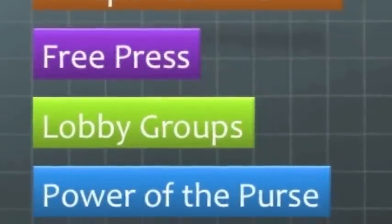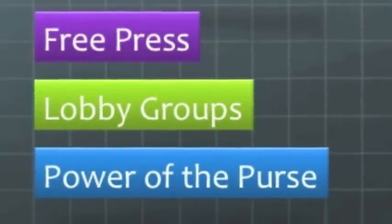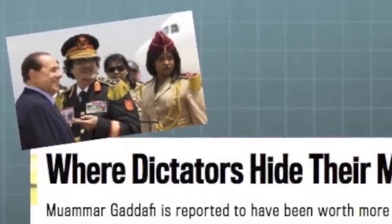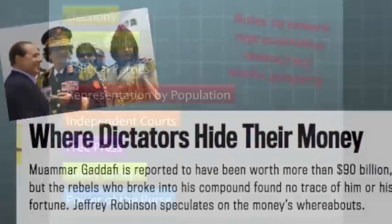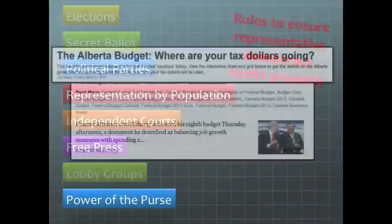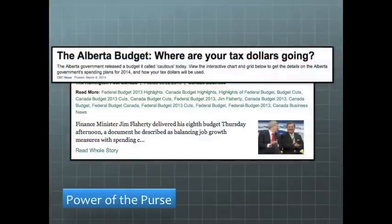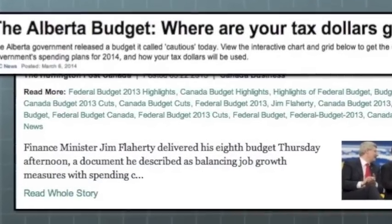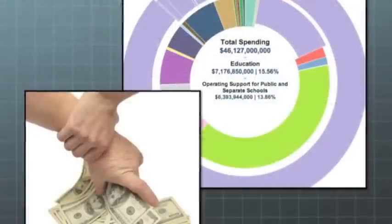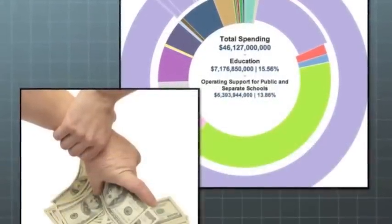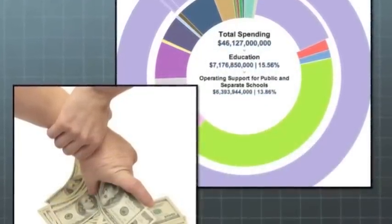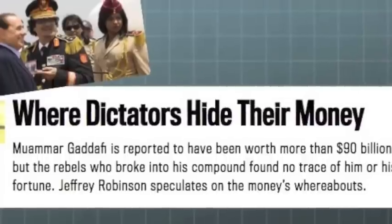One last way we can prevent our representatives from abusing their power is through the control of money. Many dictators will treat taxes or other government revenue as their personal bank account, but most democracies have what's called power of the purse, which means the government must get permission to spend money by introducing a budget every year that the legislature must vote on. The Prime Minister can't just spend money however he or she wants, and when voted out of office, that government money stays put, while a lot of dictators will take the money with them.